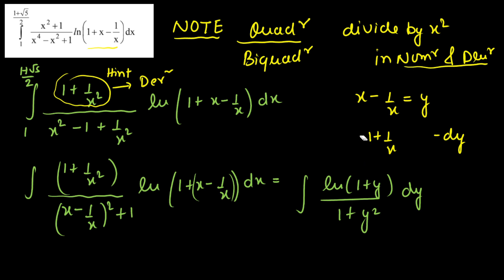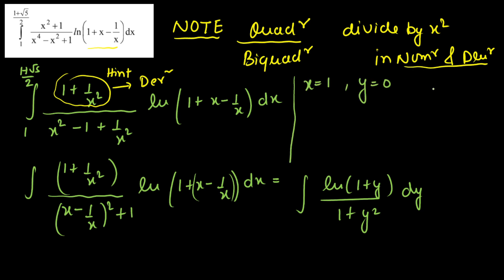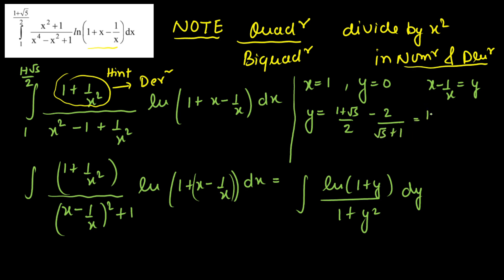Now let's calculate the new limits. For the lower limit, when x = 1, y = 1 - 1/1 = 0. For the upper limit, when x = (1 + √5)/2, we compute y = (1 + √5)/2 - 2/(√5 + 1). Rationalizing gives (1 + √5)/2 - (√5 - 1)/2. The √5 terms cancel and we get 2/2 = 1. So when x = (1 + √5)/2, y = 1. The new limits are 0 to 1.